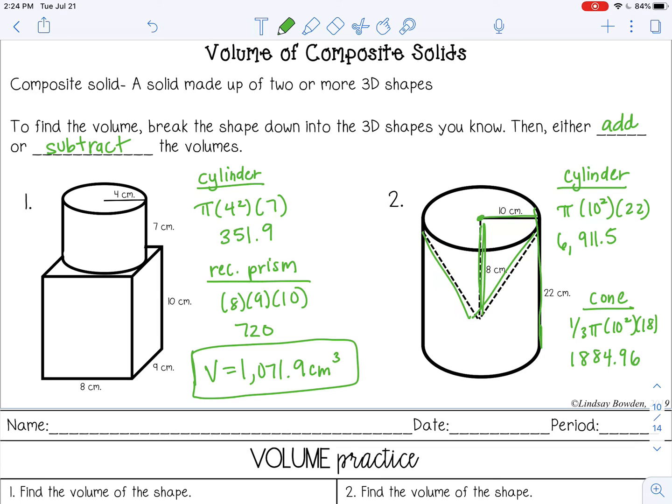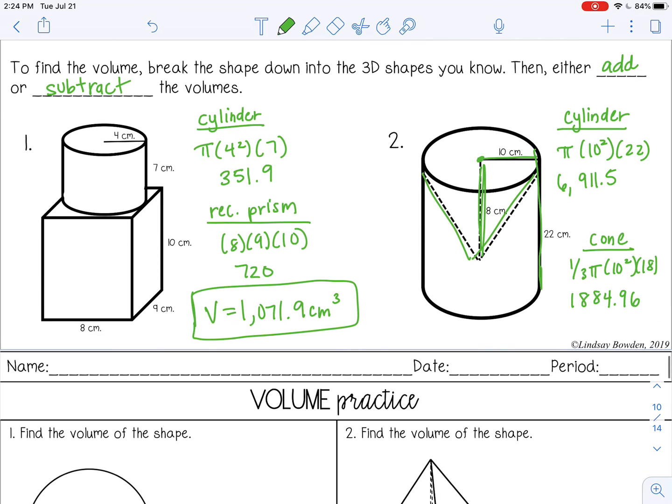And remember you also want to subtract on this. So we're not adding, we're subtracting. And you get about 5,026.5 centimeters cubed. You can go ahead and stop the video now and complete the practice and check it with your teacher.